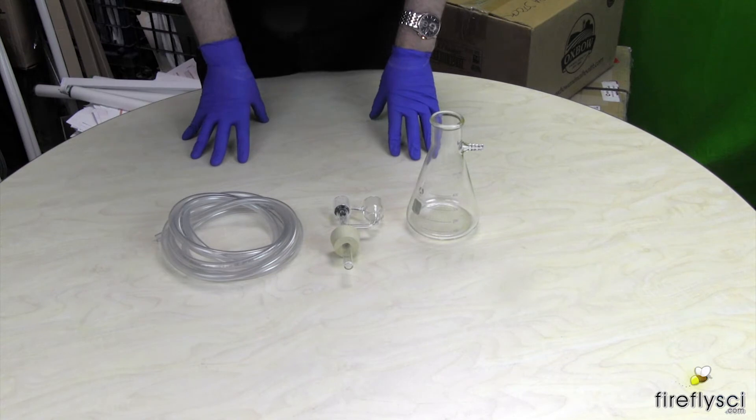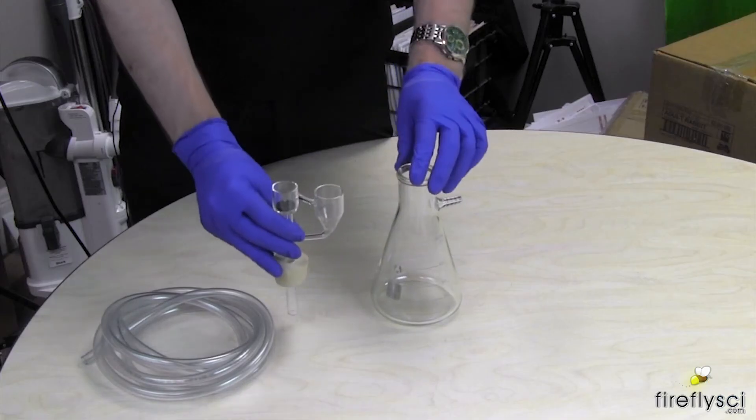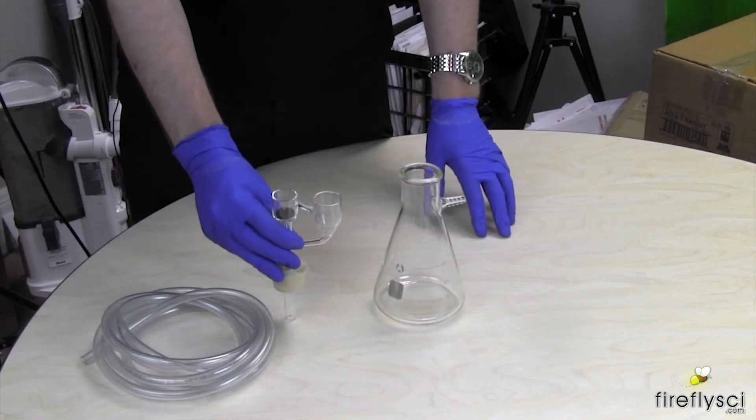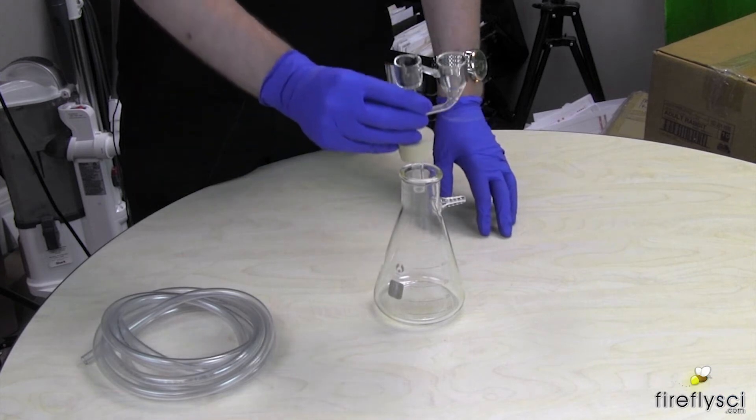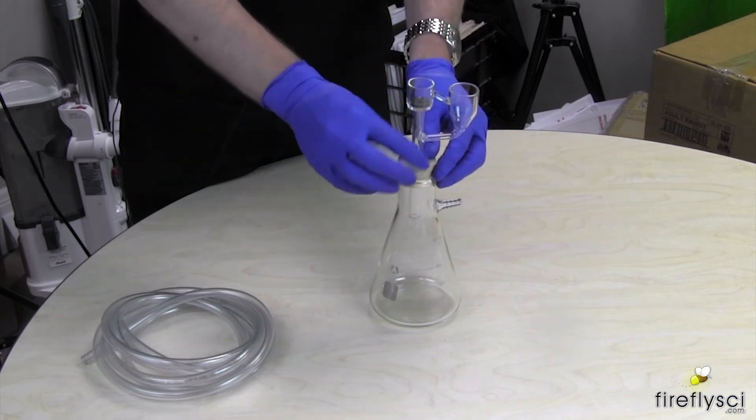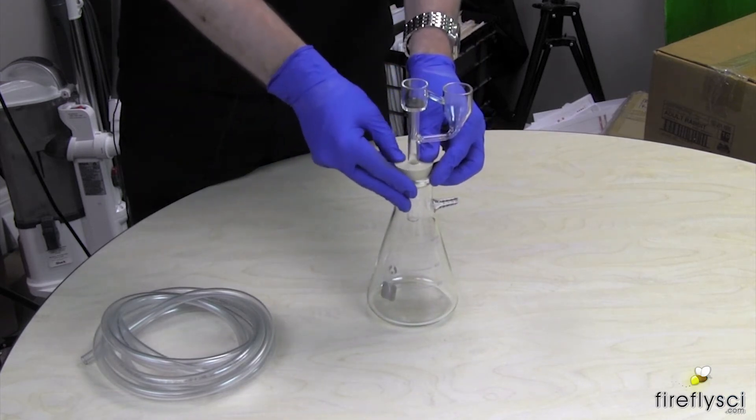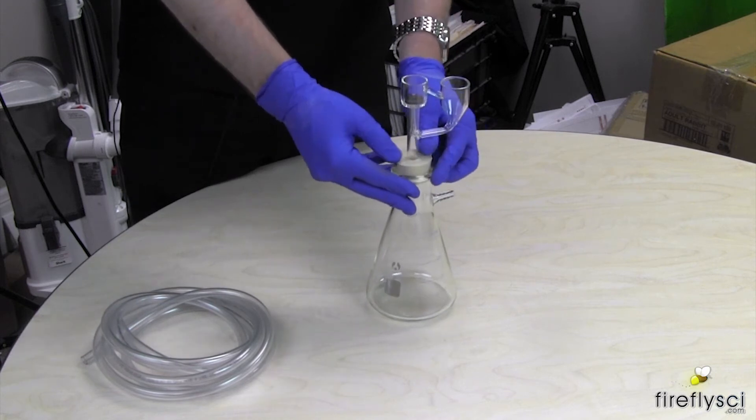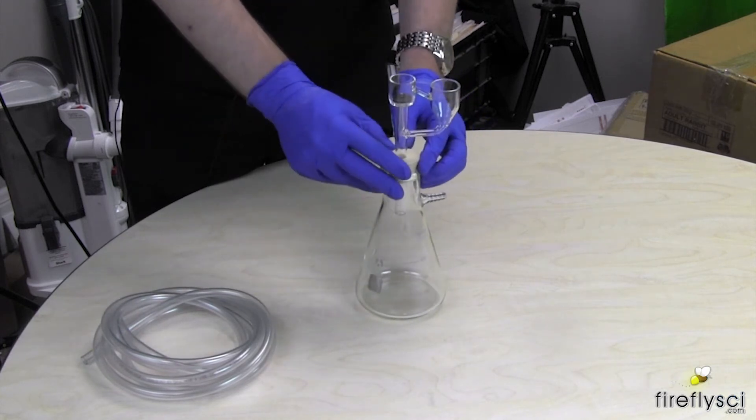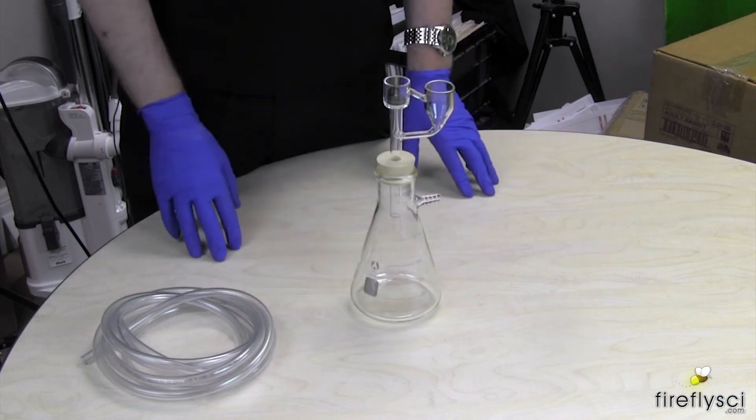So let's go ahead and get this hooked up. So in the first step of setting up the cuvette washer, we're going to take our cuvette washer here and put it right down into the vacuum flask. Make sure you push down so there's a good seal and we're ready for step number two.